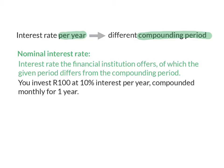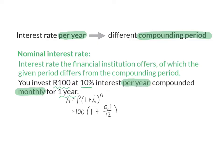Let's have a look at a simple example. You invest R100 at 10% interest per year, compounded monthly, for one year. We can now substitute into our compound interest formula — the interest is 10%, but it is compounded monthly so we divide by 12, and it is for one year, which we convert to months. If you calculate this final amount, you will get R110.47.